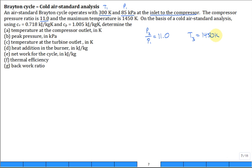1450 Kelvin on the basis of a cold air standard analysis using this value of C sub E, this value of C sub P. And if you do the ratio, you find that K is close enough to 1.4. It's 1.4, we'll just use 1.4.